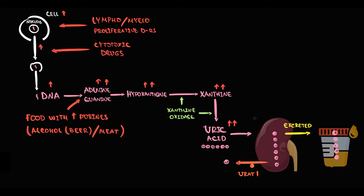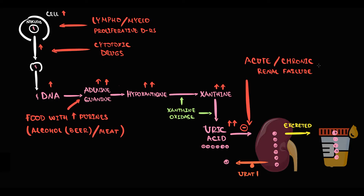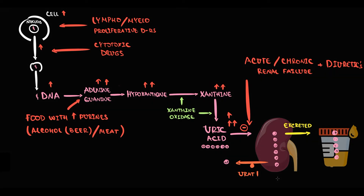The second group of factors are those that decrease the excretion of uric acid. The major factor is acute or chronic renal failure, because with decreased renal excretion a greater amount of uric acid remains in the circulation. Diuretics are also a factor, as most diuretics decrease the secretion of uric acid into the urine.